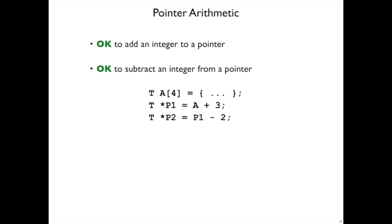It's okay to subtract an integer from a pointer as well. That corresponds to adding a negative number, of course, but we can think of it as moving backwards in the array. So if p1 is pointing at the fourth element of the array and I subtract 2 from that, then p2 will be pointing at the second element of the array.